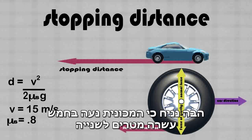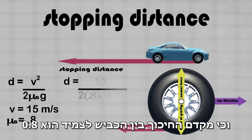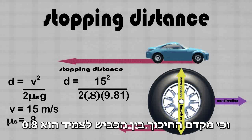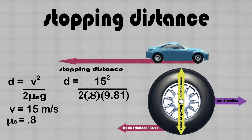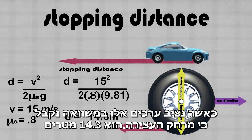Say that the car was traveling at 15 meters per second, and we assume that the coefficient of friction between the road and the tires is 0.8. Plugging these values into the equation, we're able to find that the stopping distance is 14.3 meters.